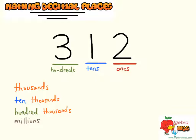For the ones digit, that would be a 2. For the tens digit, that would be a 1, but that represents 10 as the tens digit. For the hundreds, that would represent 100, so 3 would be representing 300. We say this number as 300, 10, 2 — or we can say 312 by combining the last two.